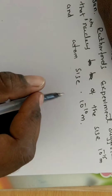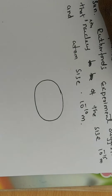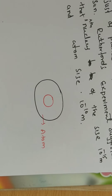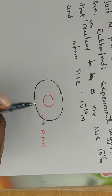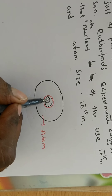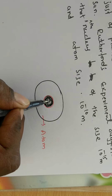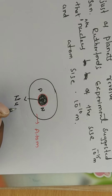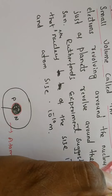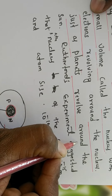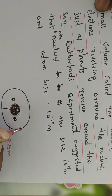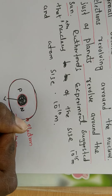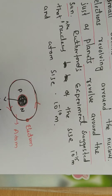The atom has a nearly spherical shape. Most of the mass of the atom and the total positive charge are concentrated at the center of the atom. At that center, two elementary charged particles are present — the proton and the neutron — and this center is called the nucleus. The electrons revolve around the nucleus in circular paths, just as planets revolve around the sun.